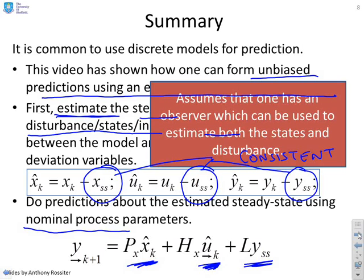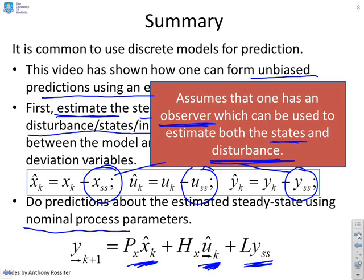And you'll see in summary here, just to remind you because this is quite important, it's implicit that you have an observer which can be used to estimate both the states and critically a disturbance. You'll see the definitions of x_ss, u_ss and y_ss depend upon the value of the disturbance.